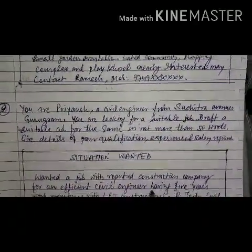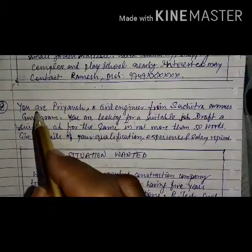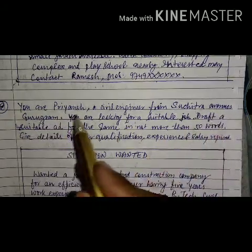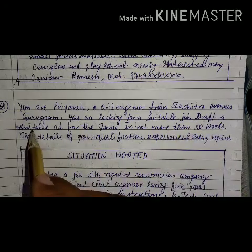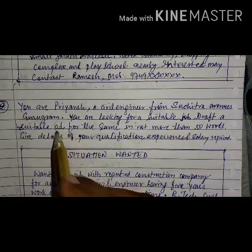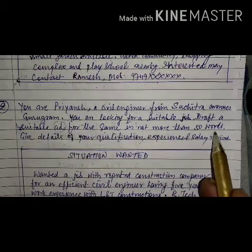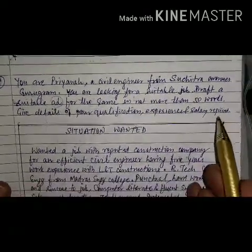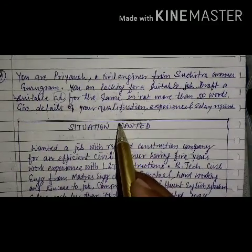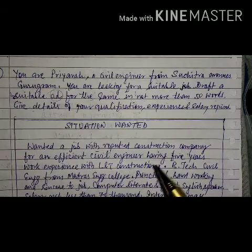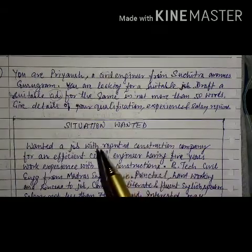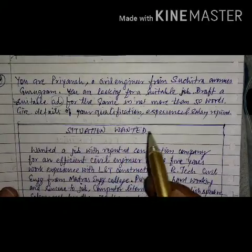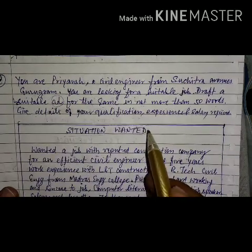The next ad type is 'Situation Wanted.' For example: 'You are a civil engineer from Suchitra Avenues, Gurugram. You are looking for a suitable job. Draft an advertisement in not more than 50 words giving details of your qualification, experience, and salary required.' The title 'Situation Wanted' is used when you need a job, whereas 'Situation Vacant' is used when someone is offering a job.